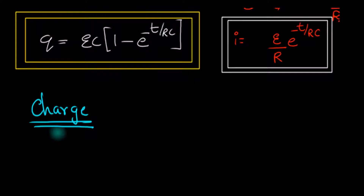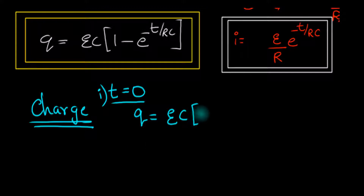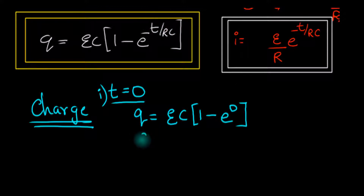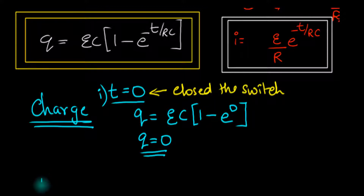What we'll do is substitute different values of t and see what happens. Let's first substitute t equal to 0. The charge at t equal to 0 is just going to be EC times 1 minus e to the power 0. Because this whole thing becomes 0, and e to the power 0 is just 1, so 1 minus 1 cancels and you get charge equal to 0. That makes a lot of sense because we took the charge on the capacitor to be 0 at time t equal to 0, because we just closed the switch.